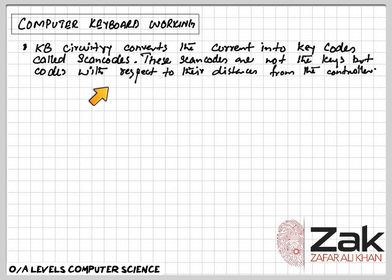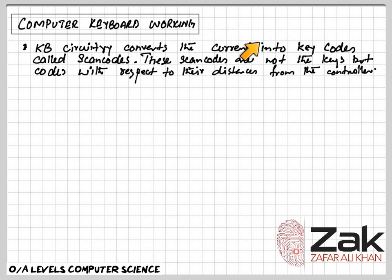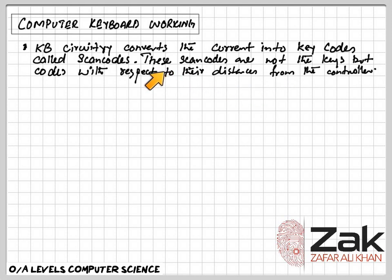The keyboard circuitry converts the circuit-generated current into key codes called scan codes. These scan codes are not the keys themselves, but codes assigned with respect to their distance from the controller. Scan codes are generated based on the location of each key over the keyboard and key matrix.